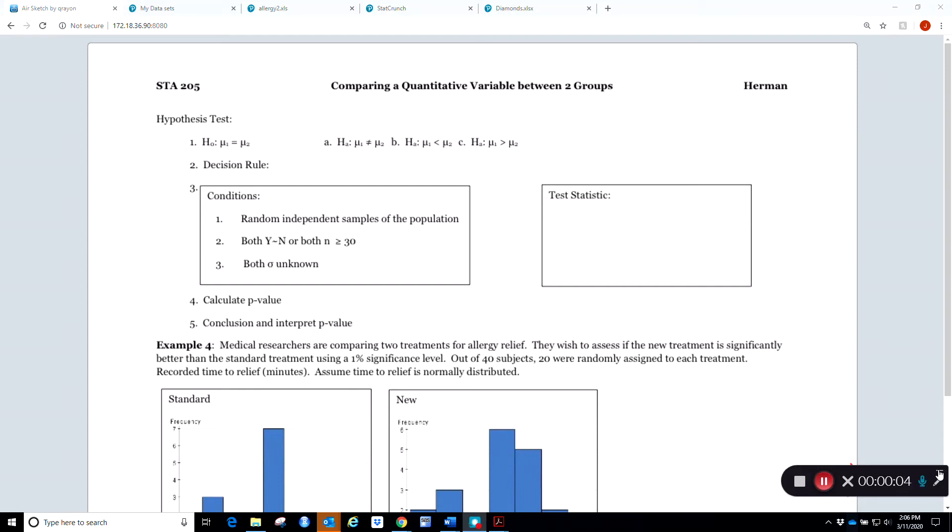Now we're going to talk about an independent hypothesis test and relate how it's similar to a dependent hypothesis test. With any hypothesis test, the main steps that change are steps one and three. We go through the same five steps; just one and three look primarily different.